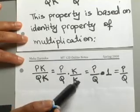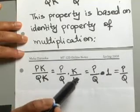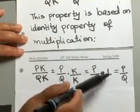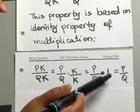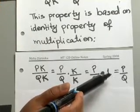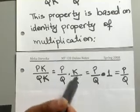Now, k over k, since it's the same term, you cancel out and that becomes a 1. It's just like having 2 over 2 is equal to 1 or 5 over 5 equals 1. That's the same idea here.